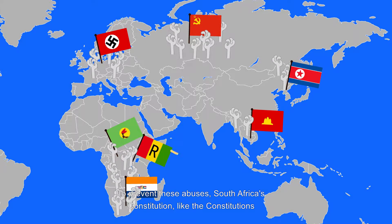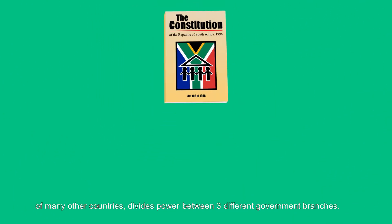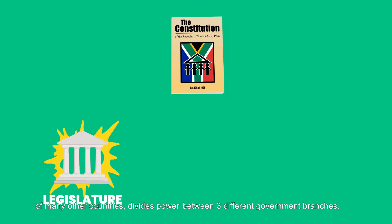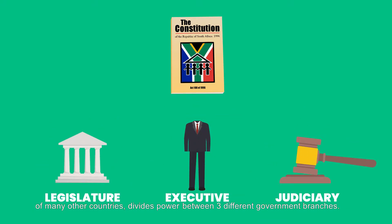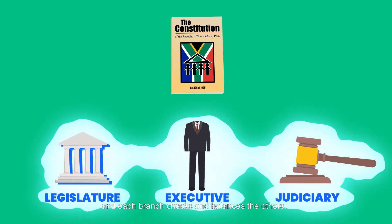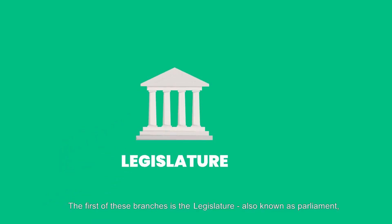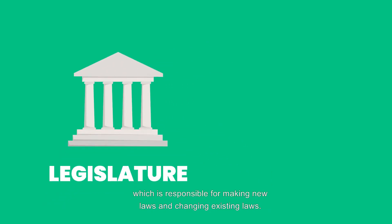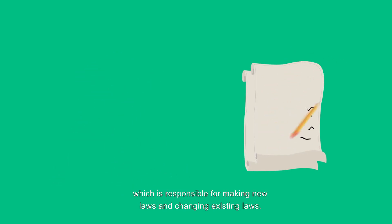To prevent these abuses, South Africa's constitution, like the constitutions of many other countries, divides power between three different government branches. Each of these branches of government has different powers and each branch checks and balances the others. The first of these branches is the legislature, also known as parliament, which is responsible for making new laws and changing existing laws.